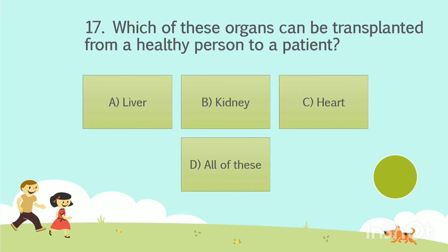Question No. 17. Which of these organs can be transplanted from a healthy person to a patient? Option A: Liver. Option B: Kidney. Option C: Heart. Option D: All of these. Your time starts now. The answer is Option D: All of these.